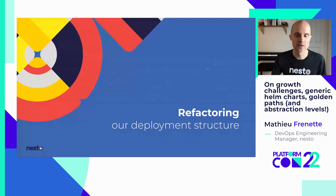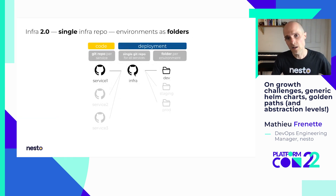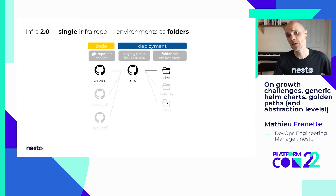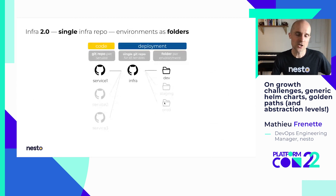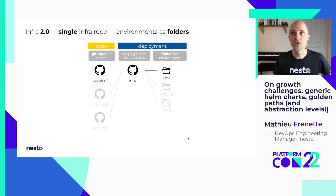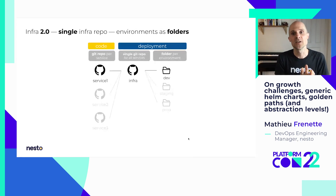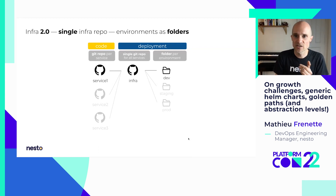So we refactored our entire deployment structure. We combined all those different infrastructure repos into a single mono repo. And instead of using branches for each environment, we instead used folders. The real advantage was that with this new setup, we could have an entire snapshot of the whole system at each modification. Each Git commit now corresponds to one snapshot of how all microservice versions and configurations in all environments looked at one specific point in time.